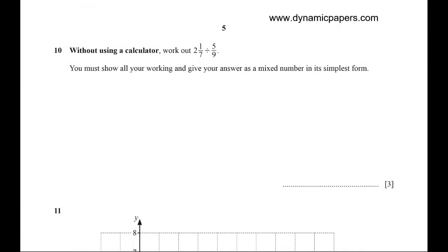Question 10: Without using a calculator, you have to show all your working and all your steps to get your three marks. Two and one over seven is a mixed number. We have to convert it into an improper fraction.